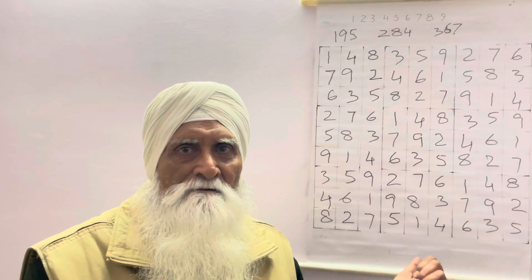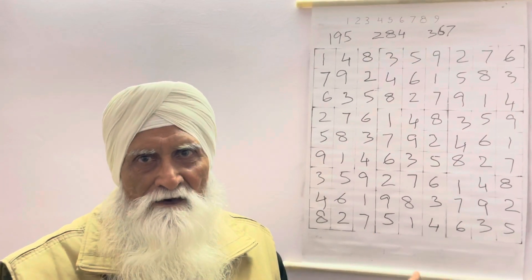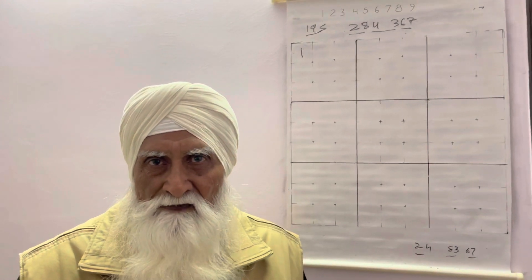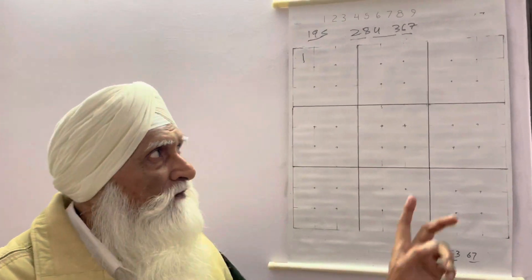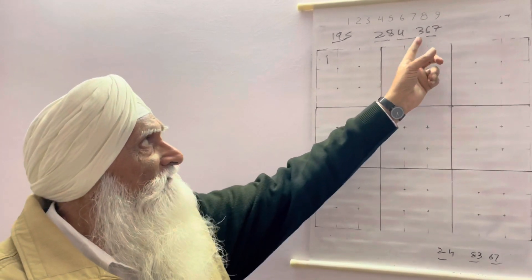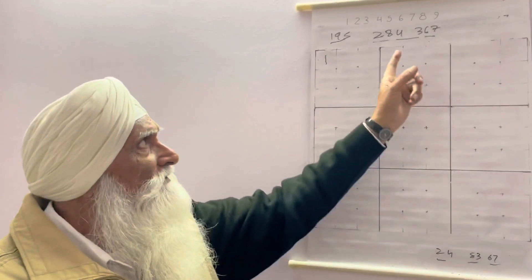This is the second method and now I will explain the third method. So I will explain now the third method of writing the grid. In this method, what we do, we retain only one set of three digits and balance six digits are divided into three groups of two each.